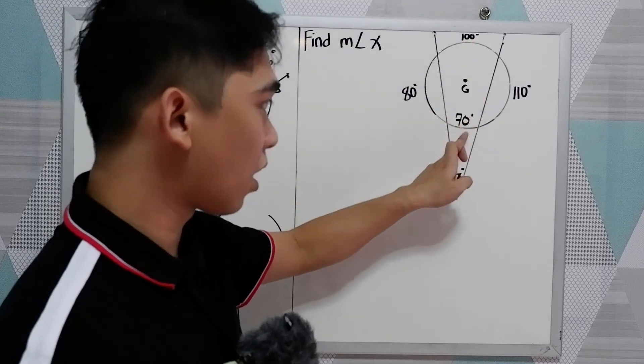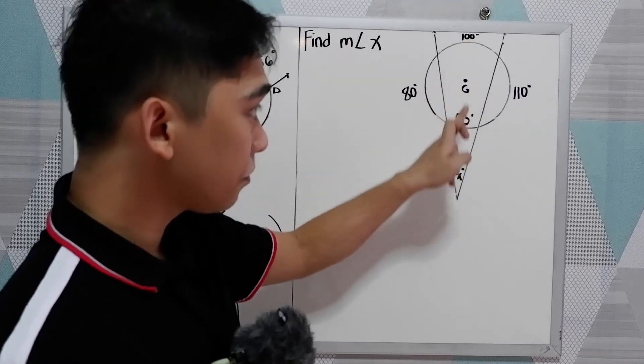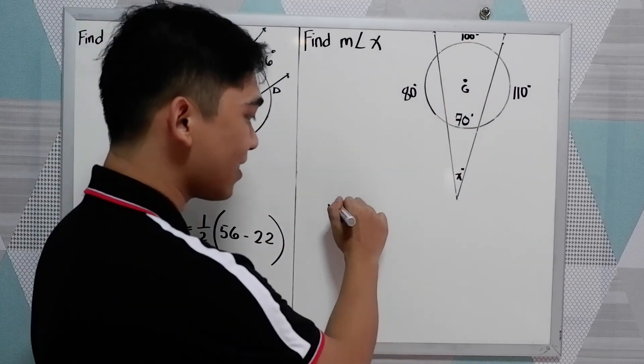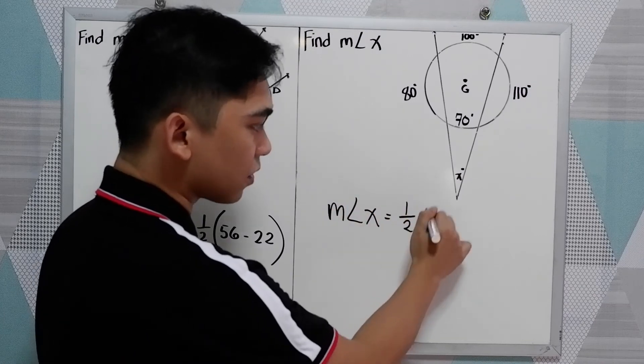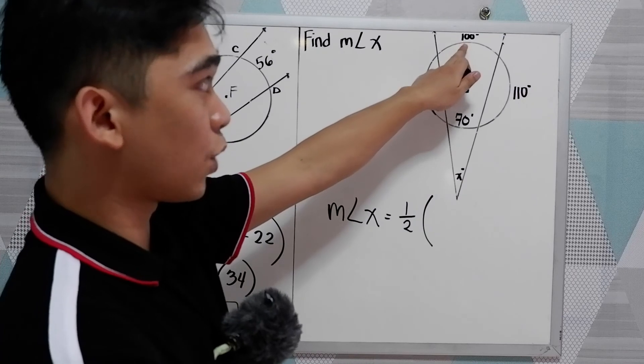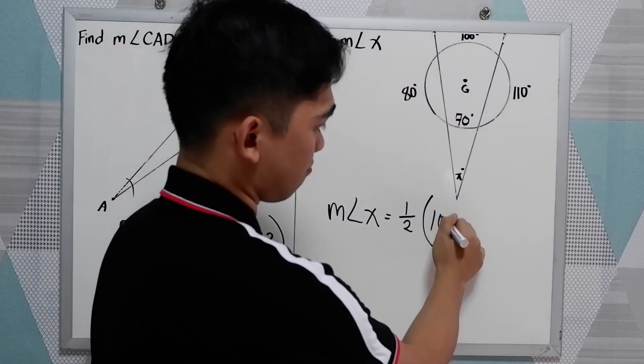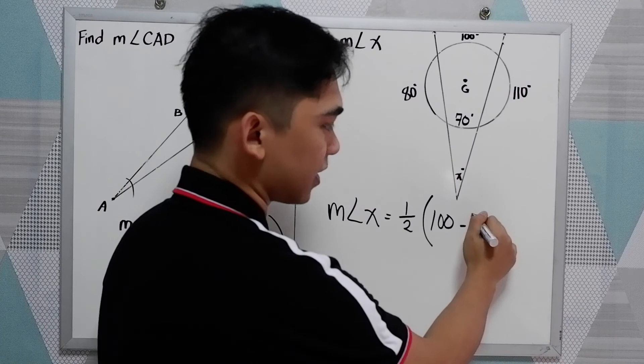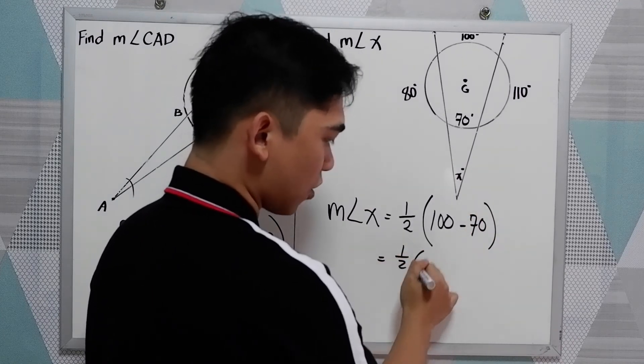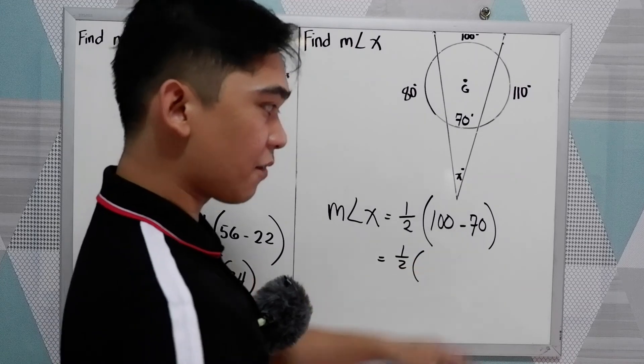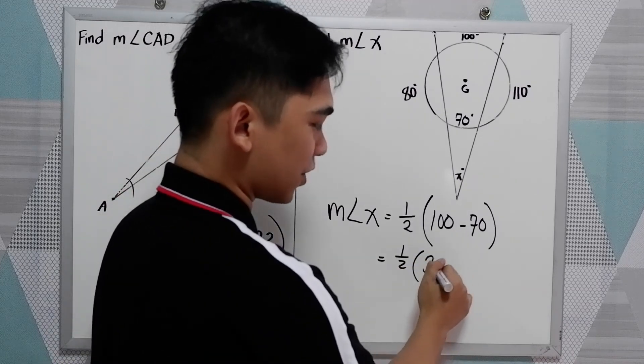Now we have the two arcs. So to find the measure of angle X is equal to one half of the difference, 100 minus 70. So one half of 100 minus 70, that is 30.